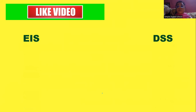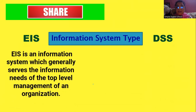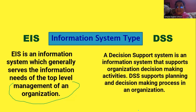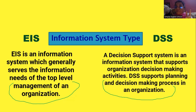Point number one: what kind of information system is each? EIS is an information system that generally serves the information needs of the top level of management of an organization. DSS, a Decision Support System, is an information system that supports organizational decision-making activities. So it is very clear that both serve different needs — EIS serves top level management, while DSS serves middle level management where help and support in decision making is needed.